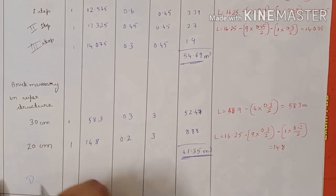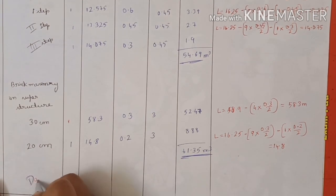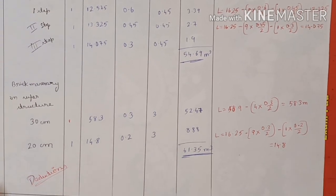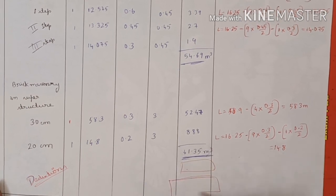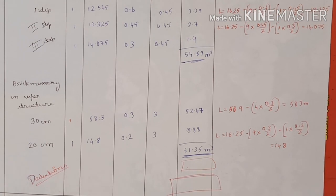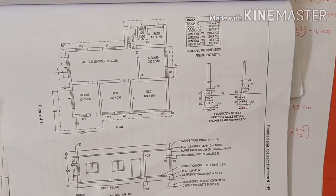After this you have to make deductions for doors, windows, ventilators, and so on, then subtract that deduction value from the total. After that, create the abstract form. Read the question properly and according to what they have asked, do the estimation accordingly.